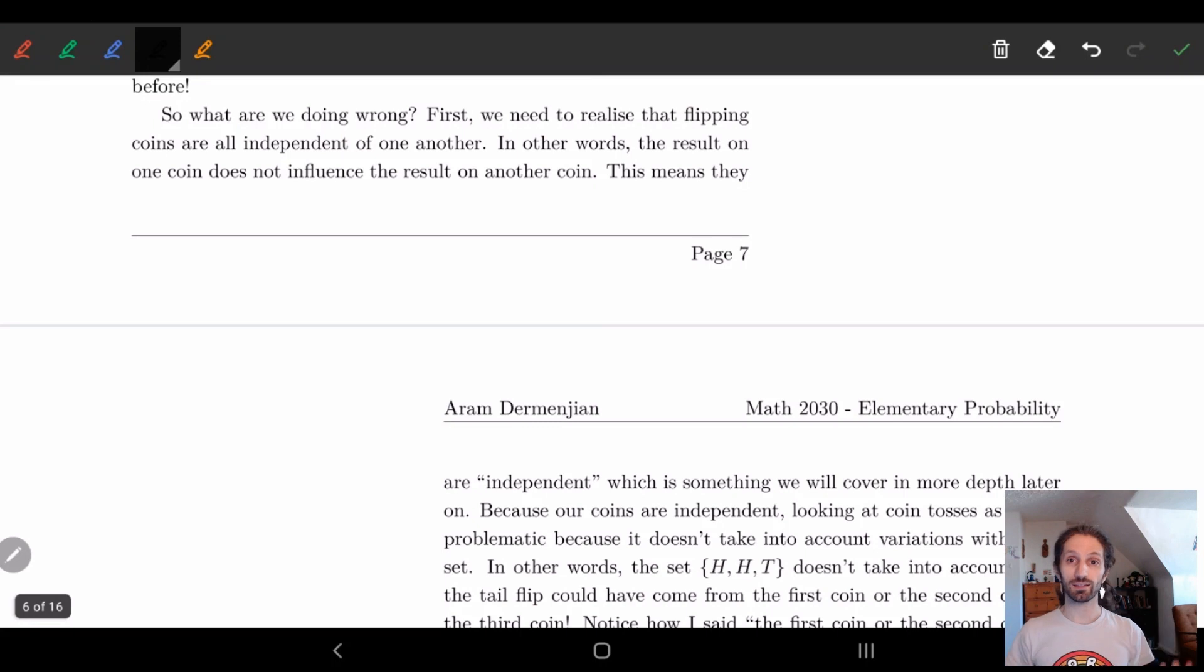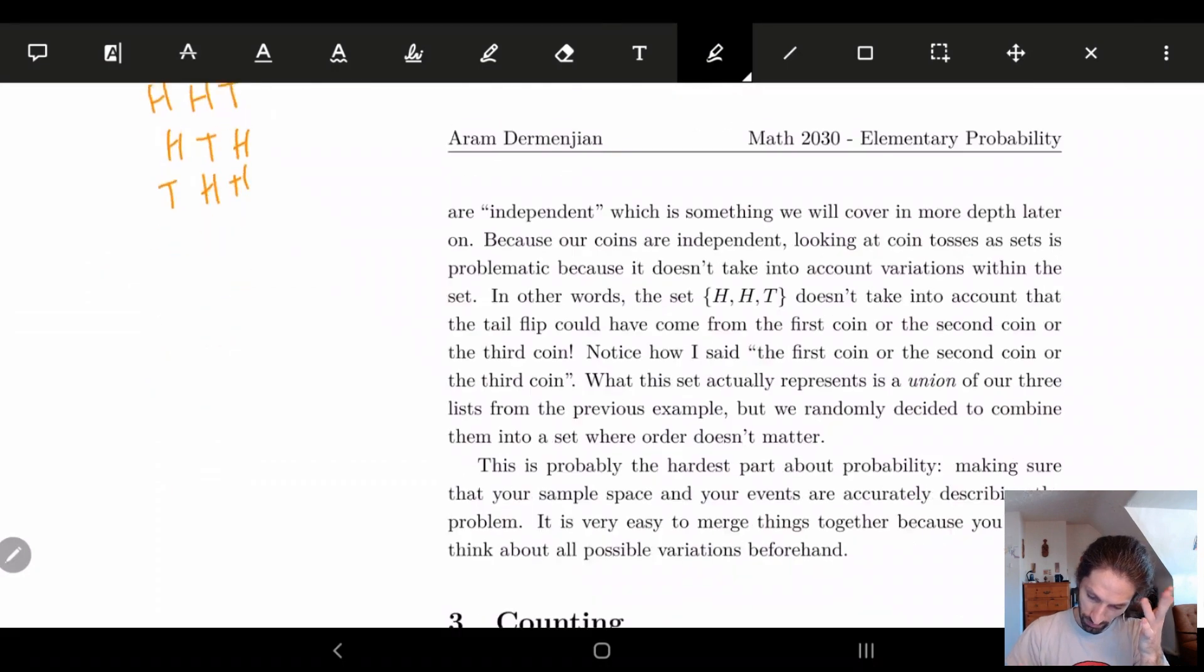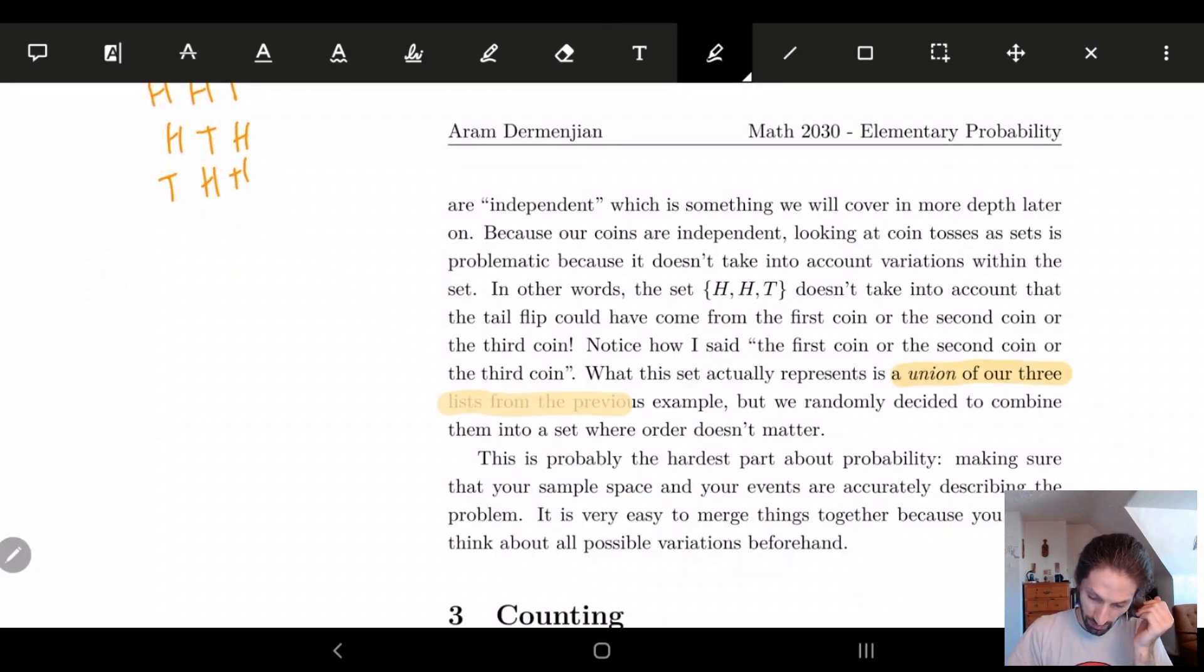And the reason why is because in this case, we're forgetting some information. And this is where the common student mistake is - we forget some of these things. In essence, each of these coin flips are independent of one another. They don't rely on one another. And when we're looking at the sets, in essence, they're representing three different ways of doing things. For example, the set {H, H, T} represents getting heads, heads, tails, heads, tails, heads, and tails, heads, heads. So inside of each of these sets is secretly three different elements. It's actually representing the union of our three lists from the previous example. And so we need to think about all of these things.